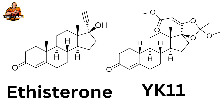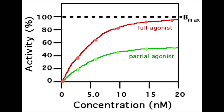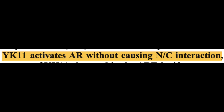Going back to partial agonism: this is a principle of pharmacology that describes a compound's ability to bind a receptor but not have the same efficacy or level of activity as a full agonist. The leading idea about how YK11 acts as a partial agonist is by activating the androgen receptor without mediating certain chemical interactions, which for the sake of this video doesn't need further dissection.